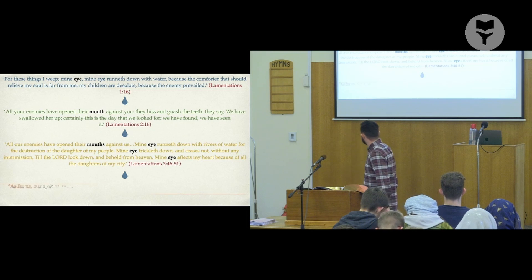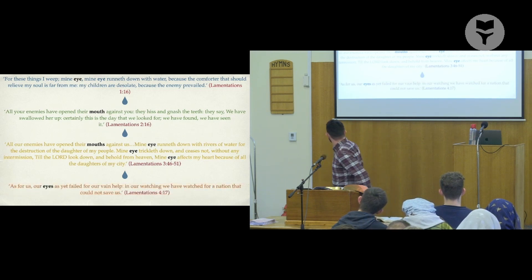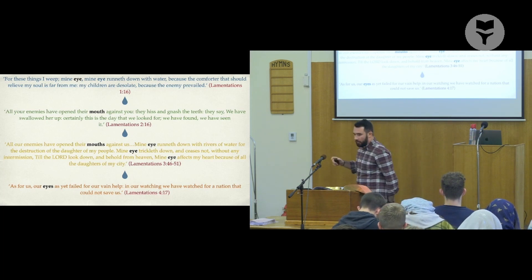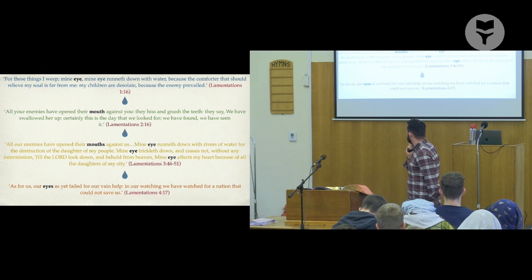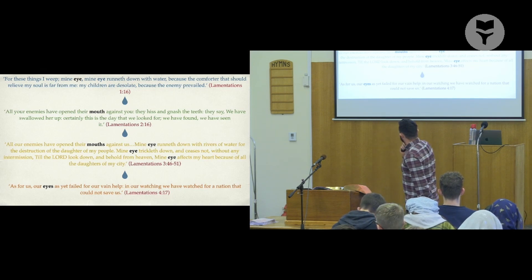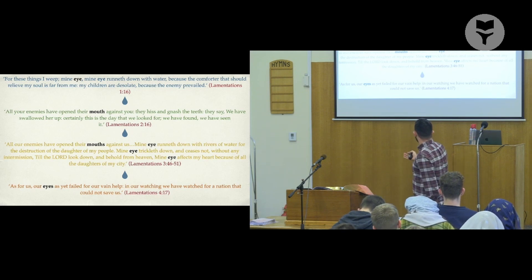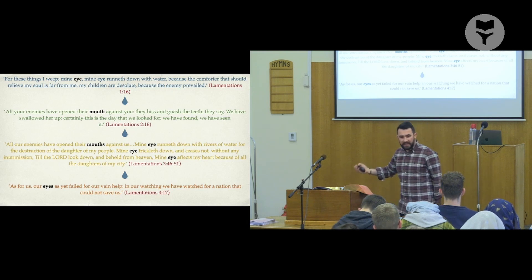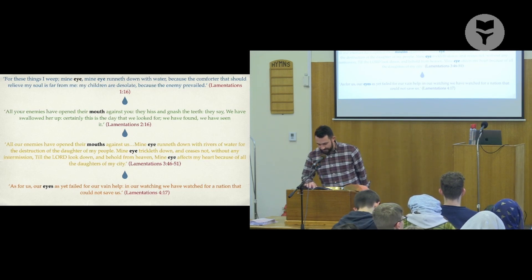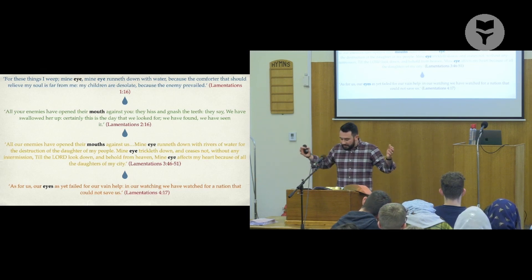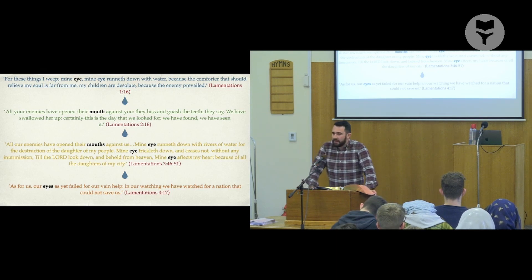Finally, in chapter four — remember chapter five has no structure — when the Ayin comes last instead of first, look at what happens: 'As for us, our eyes have failed for our empty help in our watching.' What are they watching for with their eyes? Not God's salvation — they're watching for a nation that could save them. Their eyes are failing because there is no hope; they're waiting for a human, fleshly nation to save them.